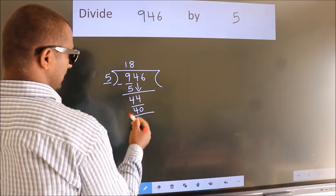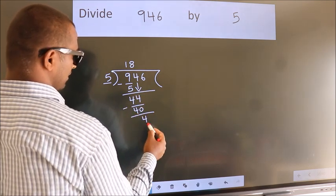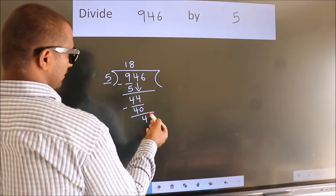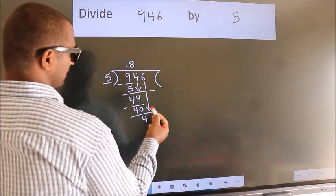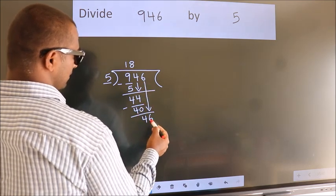Now we subtract. We get 4. After this, bring down the beside number. So 6 down. So 46.